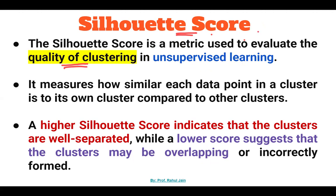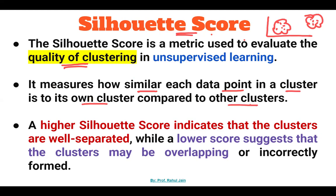Basically, clustering is a part of unsupervised learning. So when we have clustered different data points, what is the quality of this clustering — how similar these data points are within their clusters compared to other clusters — is going to be calculated using the silhouette score. It measures how similar each data point in a cluster is to its own cluster compared to other clusters.